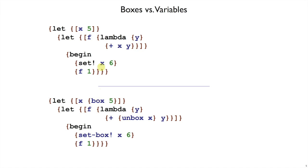In fact, we could mechanically translate this kind of example down to this kind of example. The mechanical translation is going to involve, for a variable like x, putting its value in a box, and then every time we use x, using an unbox to look up the value, and every time we set x, using set box instead to set the box that x contains.